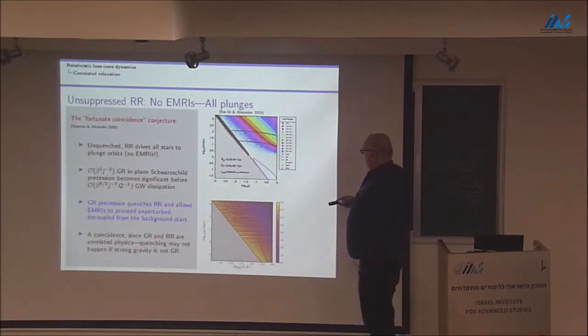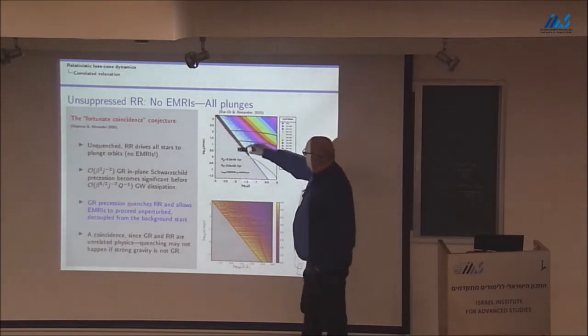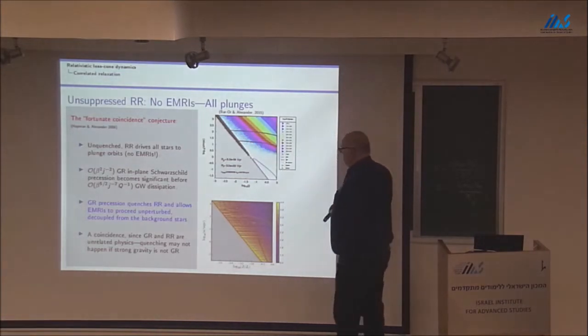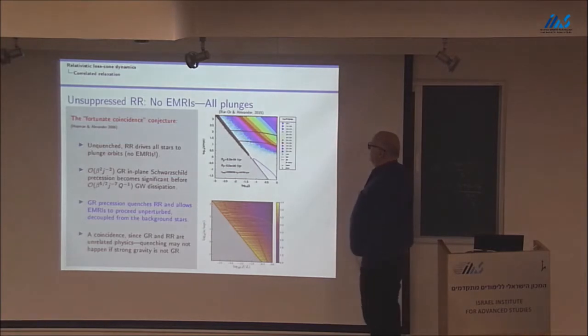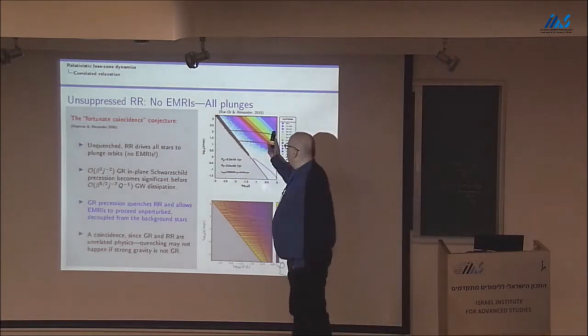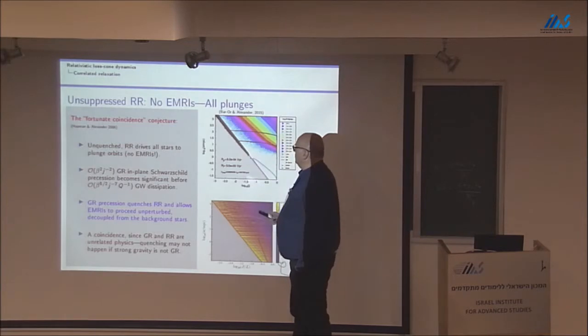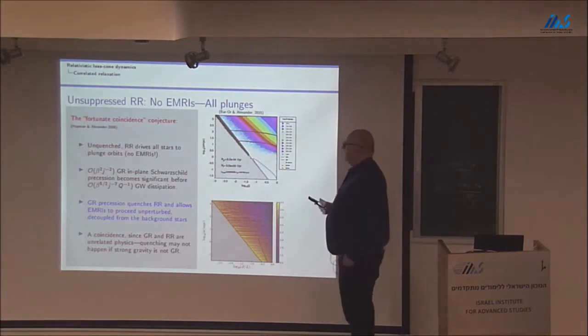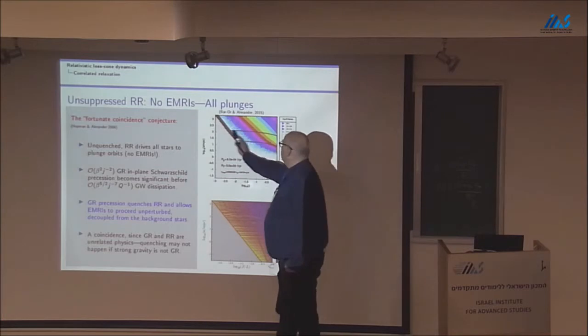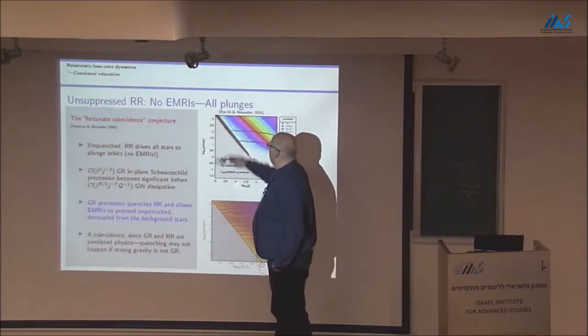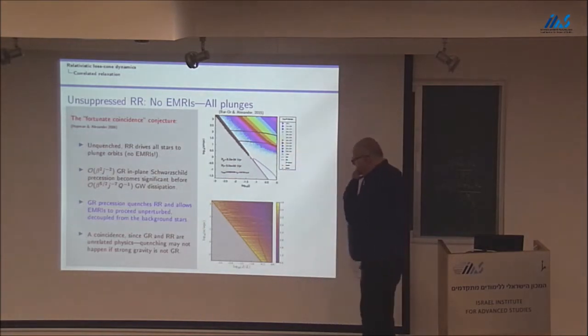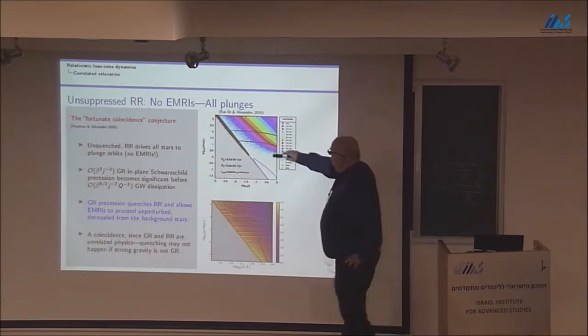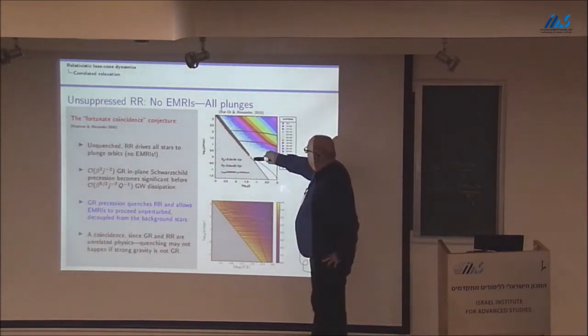So, this is where a star has to reach in order to start inspiring in. But because the resonant relaxation torques are so fast, so here I artificially closed GR in-plane precession. The torques are so fast that all the stars are thrown on plunge trajectories, and you can see it here, the trajectories in phase space are depicted as flow lines. And basically there are no stars left to reach this region.